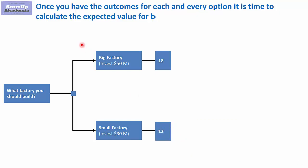Using the decision tree we would say it makes sense to go for the big factory, because the expected return from the investment is 18 million in five years, whereas with the small factory it is just 12 million. Now let's have a look at how to present it in Excel.